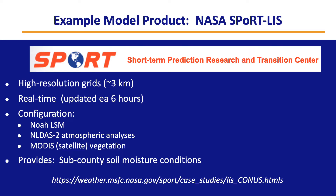Here's one example: the NASA SPORT-LIS model product. SPORT stands for the Short-Term Prediction Research and Transition Center at NASA. It provides soil moisture on high-resolution grids for the CONUS — about three kilometers — in real time, updated every six hours. It is based on the NOAA land surface model with input from the NLDAS atmospheric analysis, and uses MODIS satellite vegetation data as an enhancement to control for vegetation effects, providing sub-county soil moisture conditions.